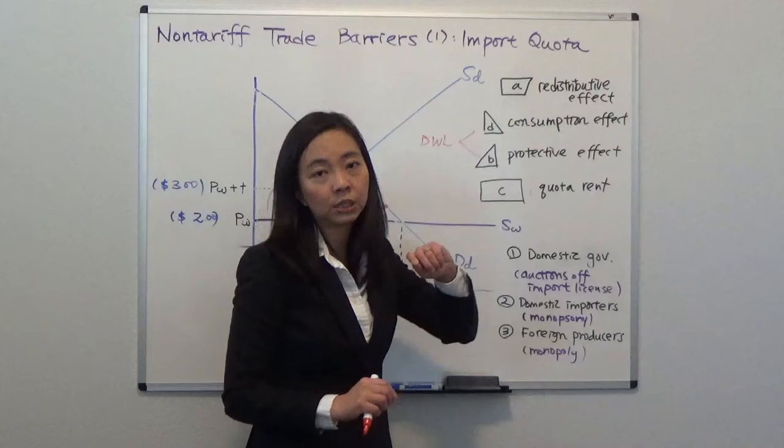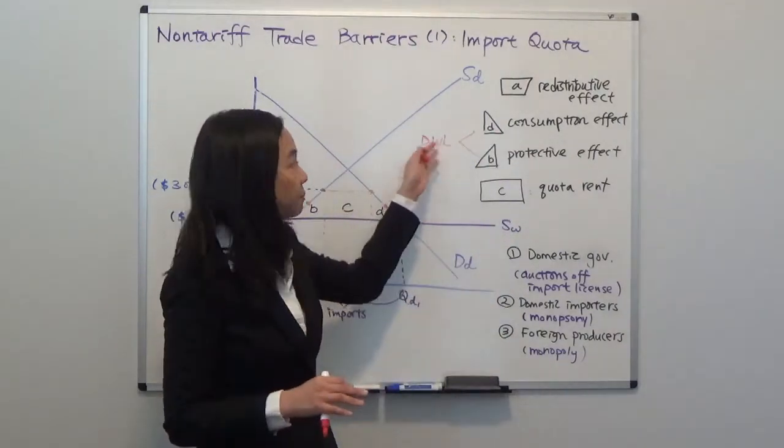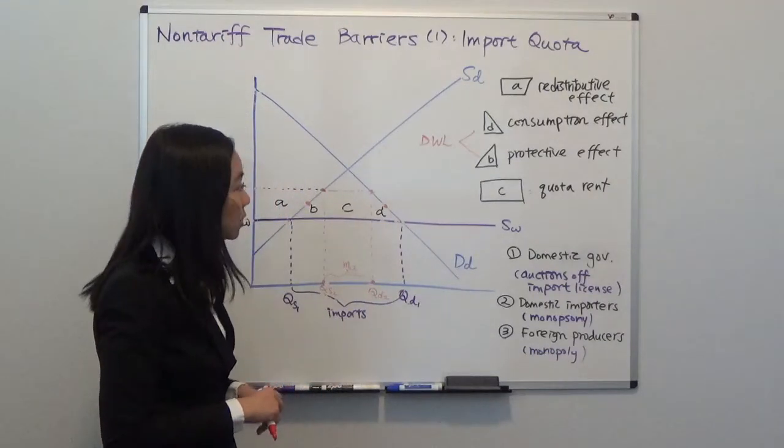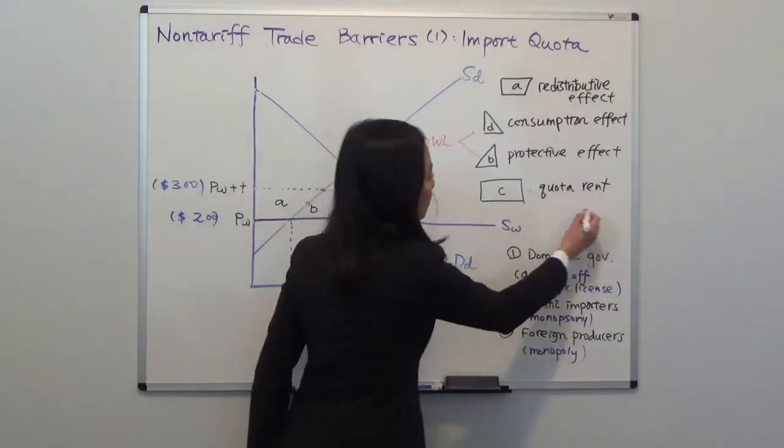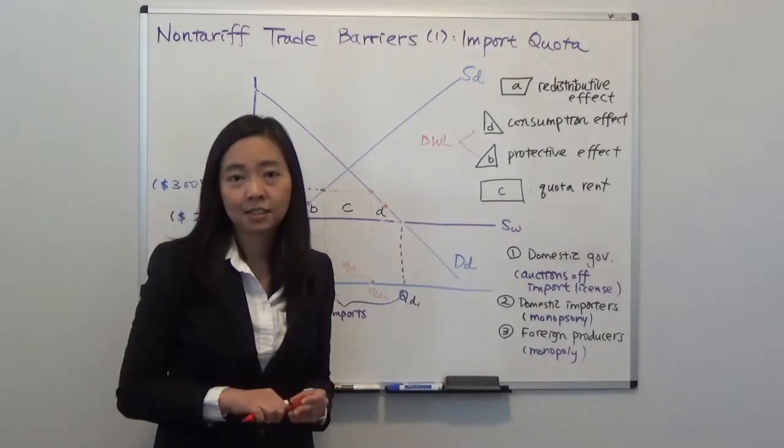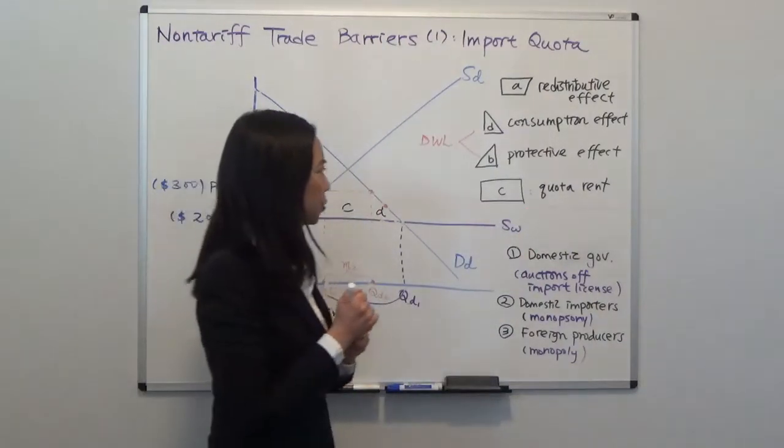So protective effect and consumption effect together, they are deadweight loss. So nobody gets that piece of pie, it's just a waste of resources. And finally, you can see the only difference really is quota rent. Area C previously was revenue effect, but now it's called quota rent.